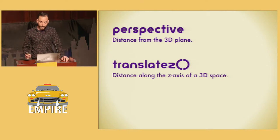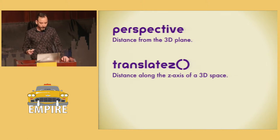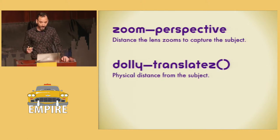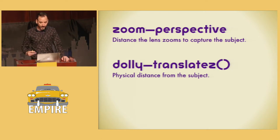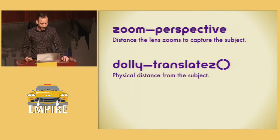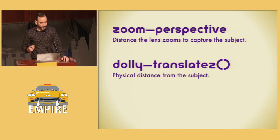So a high perspective value means you're further away from the 3D plane, so the distortion is low. And a low perspective value means you're closer to the plane, so distortion is more noticeable. Perspective is different from TranslateZ in that perspective is the distance from the 3D plane, whereas TranslateZ is the distance from the element itself. For me, I like to think of it as zoom versus dolly. When you zoom in with a camera, you stay in the same place while the lens closes the distance to the subject — that's kind of like perspective. And then dollying is just the fancy term for actually physically moving forward and backward in space — that's TranslateZ.